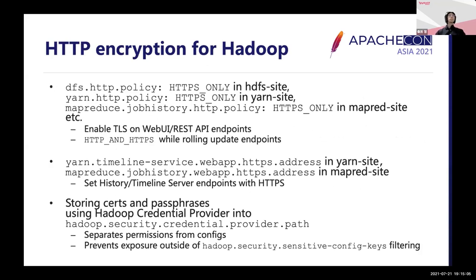TLS encryption for Hadoop Web UI and REST API can be applied via setting the HTTP policy's fixed parameters. Switching to HTTPS only in an existing cluster will lose job history server and timeline server from node managers. So to apply without downtime, first set the HTTP policy parameter to both HTTP and HTTPS to support both protocols during a rolling update. Then change the history and timeline server endpoints and restart, finally serving with HTTPS only. We prefer using the Hadoop credential provider rather than ssl-server.xml with plain text to provide server certificates and passphrases.